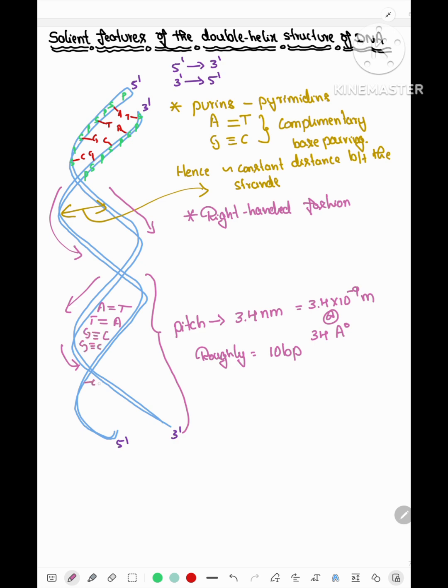When we know the sequence of one strand, we can predict the sequence present in another strand which is due to complementary base pairing. Since one pitch consists of 10 base pairs,